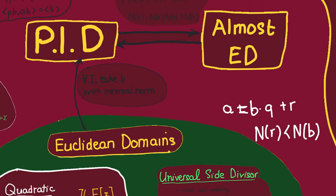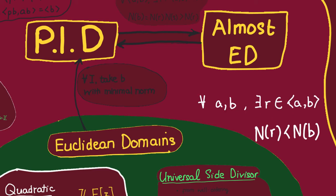Why are Euclidean domains PIDs? If we take any ideal in a Euclidean domain, we take the element with minimal norm — that should generate the ideal. Because if not, there is some element A in the ideal with a remainder R when dividing by B, and this remainder R still lies in the ideal but has smaller norm, giving a contradiction. Note that the proof only uses the fact that for all A, B we can find some element R in the ideal generated by A and B such that the norm of R is less than the norm of B. So if we replace the Euclidean axiom with this weaker condition, instead of a Euclidean norm we get an almost Euclidean norm, and a domain with that kind of norm is called an almost Euclidean domain. Almost Euclidean domains are PIDs.